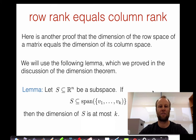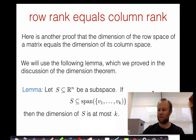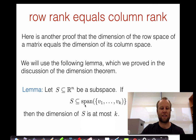In this video, we're going to give another alternative proof that the dimension of the row space of a matrix is equal to the dimension of its column space. This proof will be shorter than the previous proof, but we will make use of the following lemma that we discussed when we proved the dimension theorem. That lemma says: let S be a subspace of R^n. If S is contained in the span of k many vectors v1 through vk, then the dimension of S is at most k.